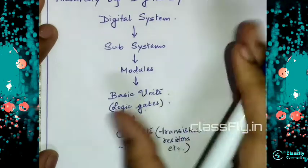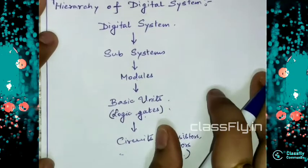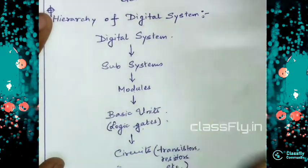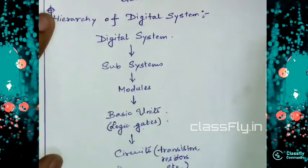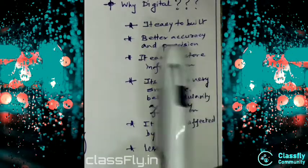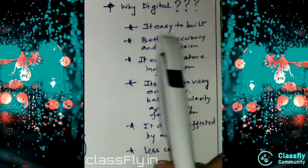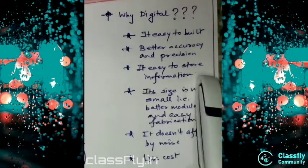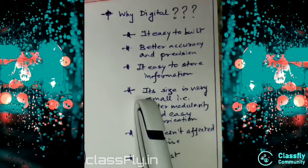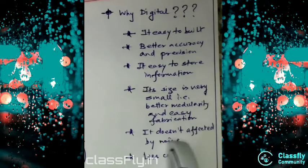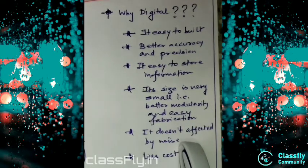Today's lecture is all about the introduction to digital electronics, so we must know the importance of digital. Why digital? It is easy to build, offers better accuracy and precision, it is easy to store information, its size is very small, it offers better modularity and easy fabrication, it is not affected by noise, and it has less cost.